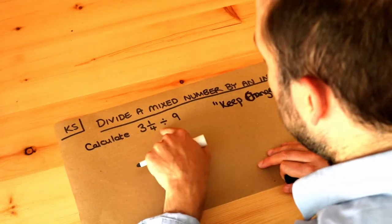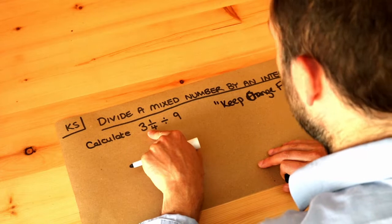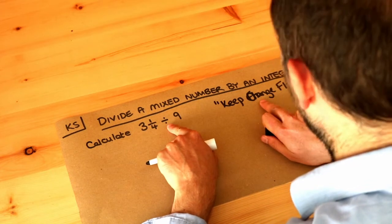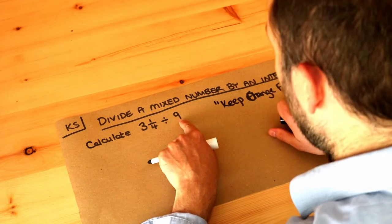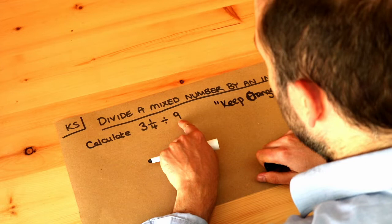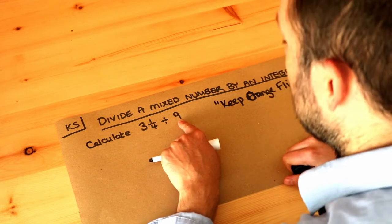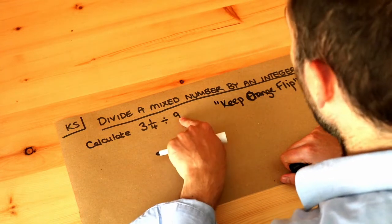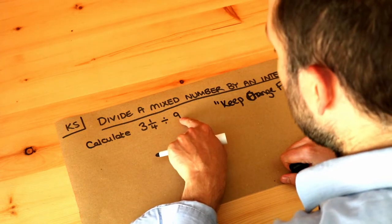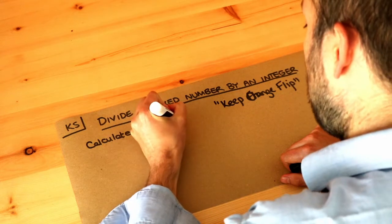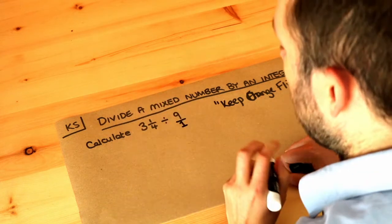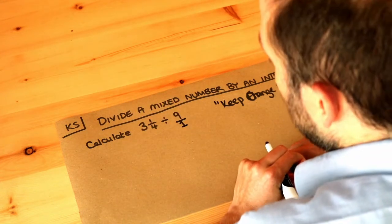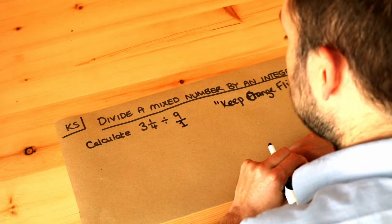So we keep that fraction as it is, we change the divide into a times, and then we flip the second fraction — except it isn't a fraction at the moment. All we need to do to turn a whole number into a fraction is put it over 1, and then we can treat this as any ordinary fraction division problem.